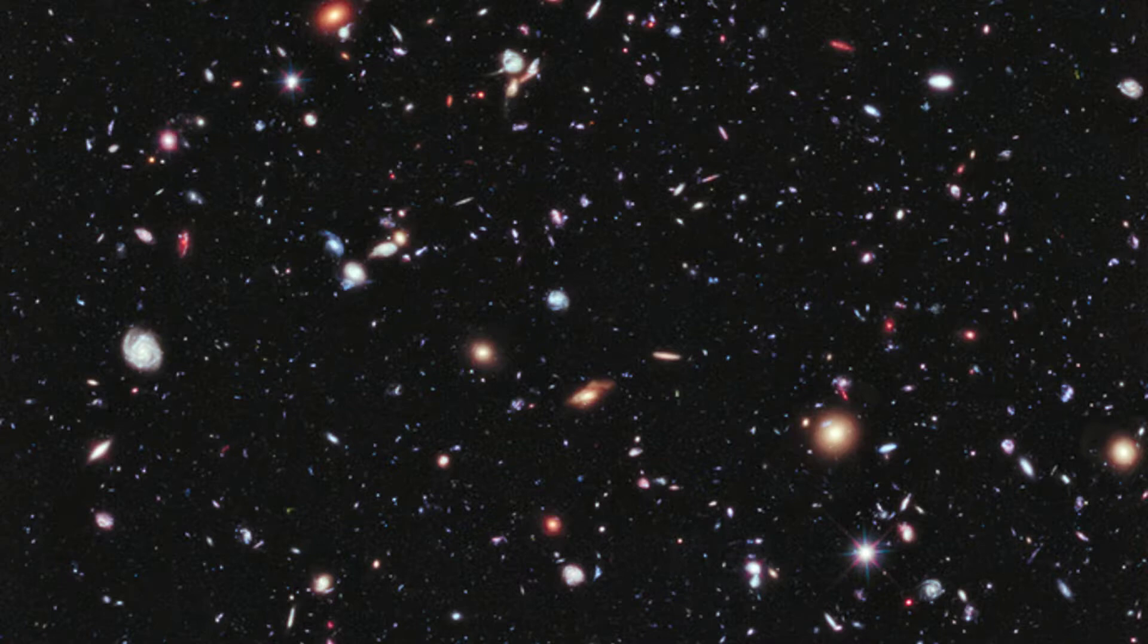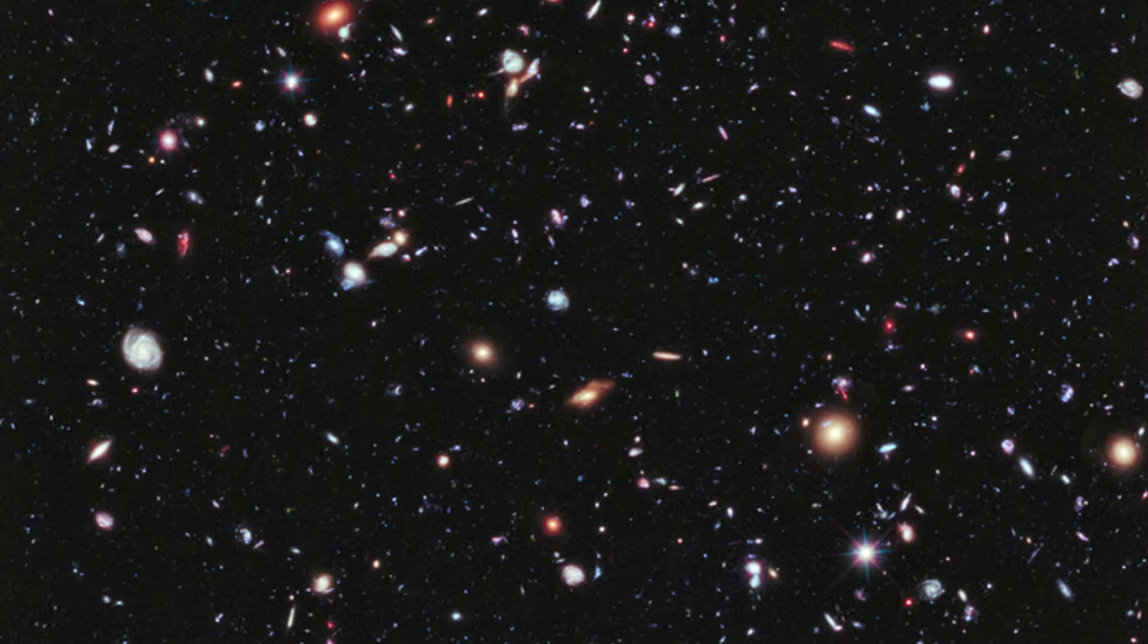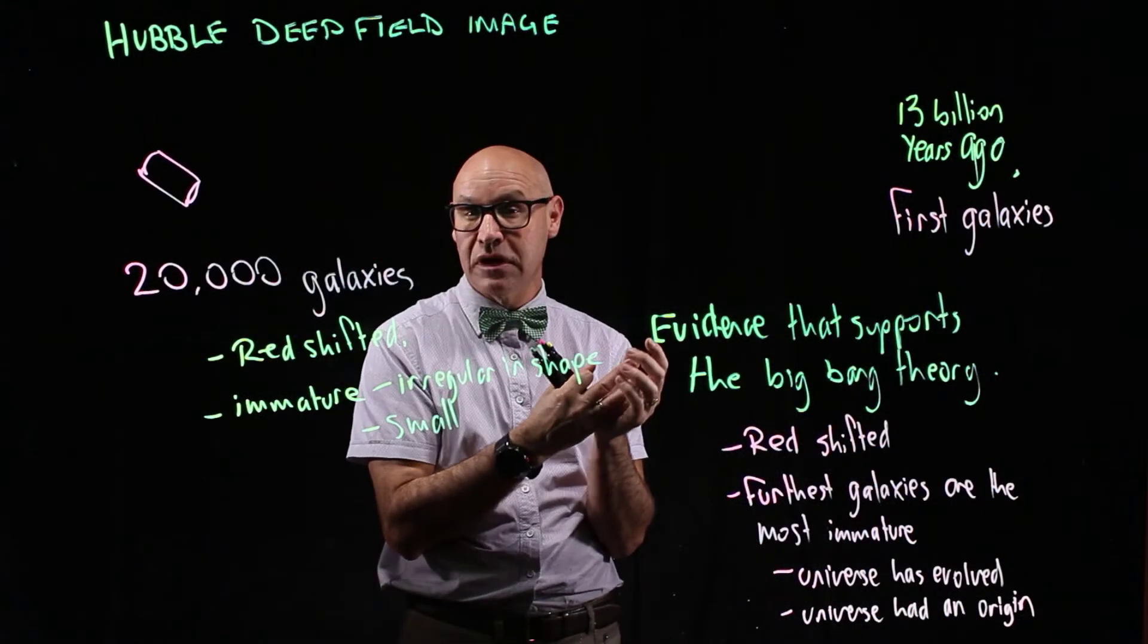So the Hubble Deep Field image provides evidence that supports the Big Bang because it shows that the distant galaxies are redshifted. And those most distant galaxies, the ones that are furthest away, are the most irregular, they're small and immature. And that provides evidence that the universe has evolved and that it has an origin.